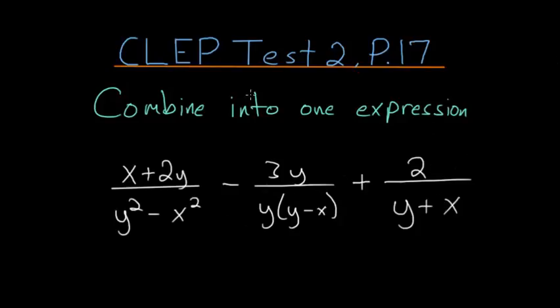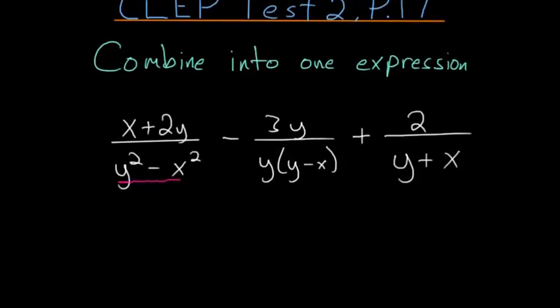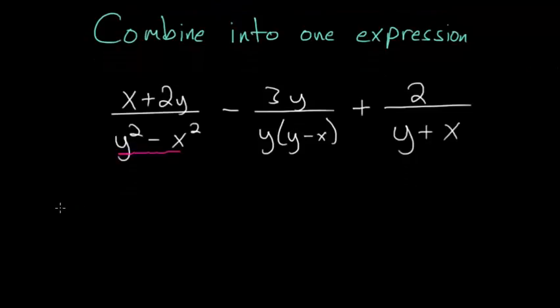Before we start looking for a common denominator, it might be easiest if we factor this here. So doing that, this entire expression is equal to x plus 2y divided by y squared minus x squared. Notice that this is a difference of two squares, and we can rewrite this as y minus x multiplied by y plus x.